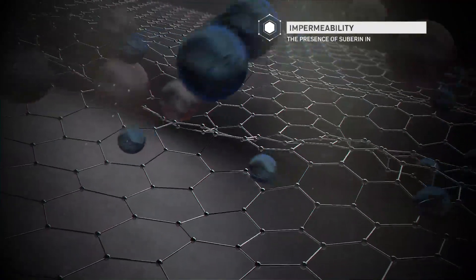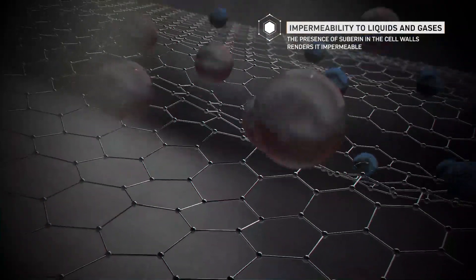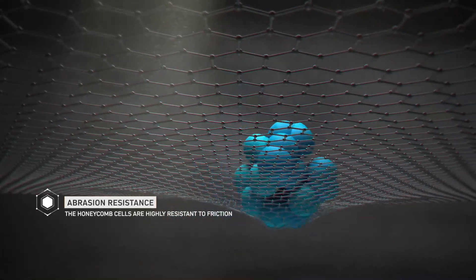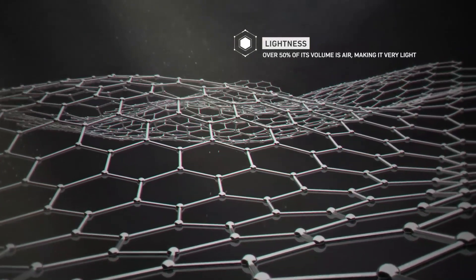Impermeability to liquids and gases: the presence of suberins in the cell walls renders it impermeable. Abrasion resistance: the honeycomb cells are highly resistant to friction. And lightness: over 50% of its volume is air, making it very light.